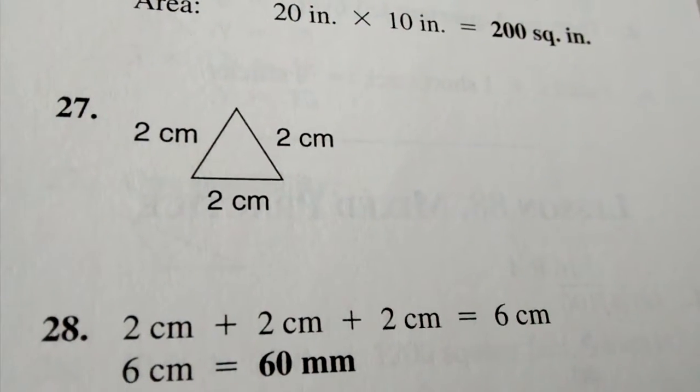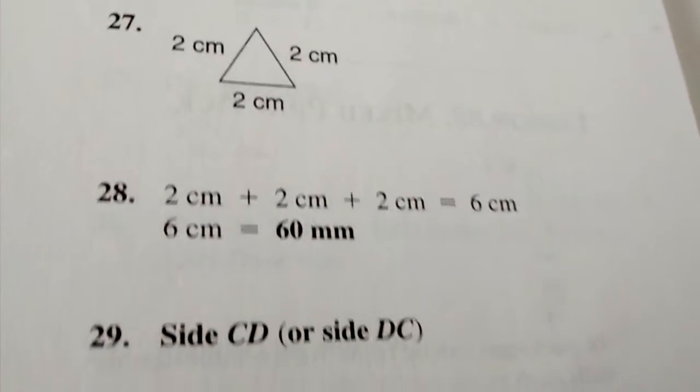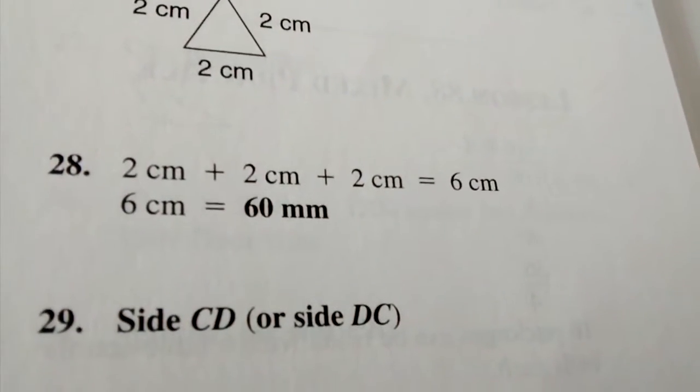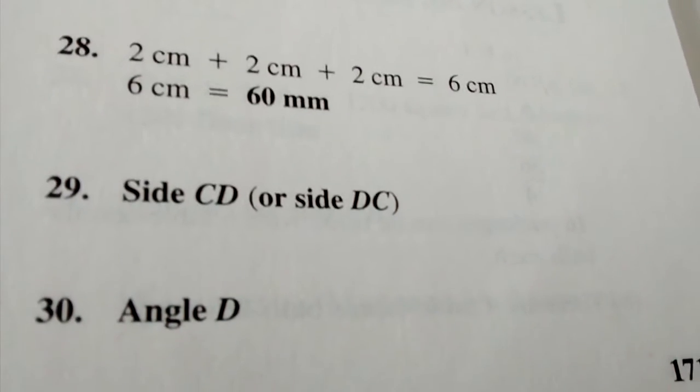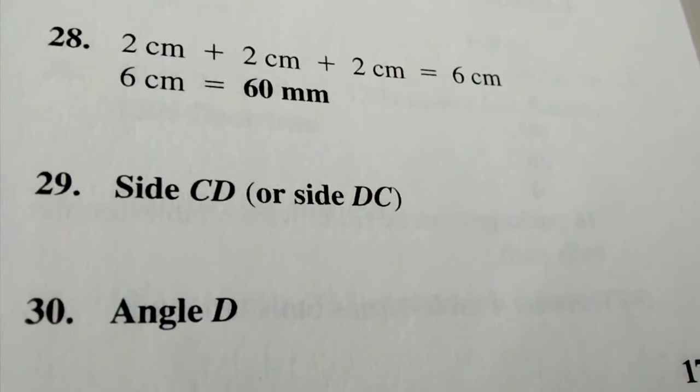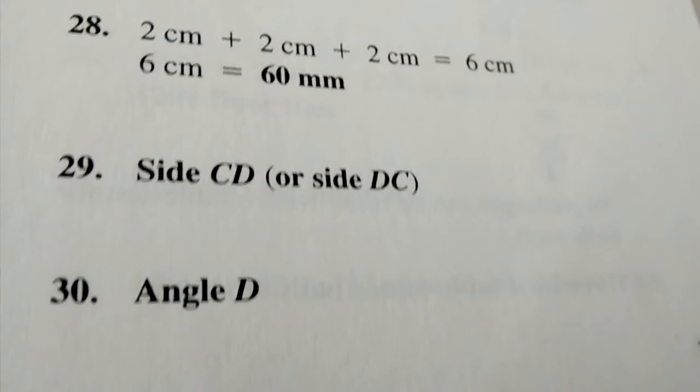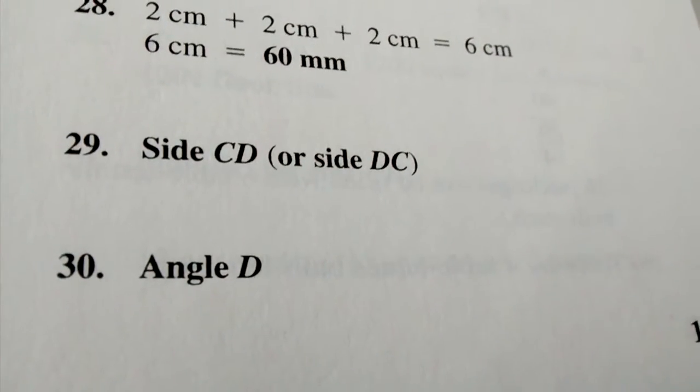take a look at the picture. Number 28, 60 millimeters. Number 29, side CD or side DC. Number 30, angle D.